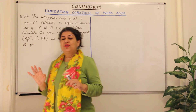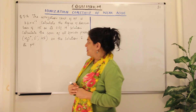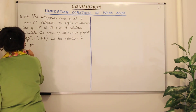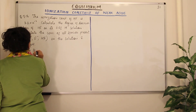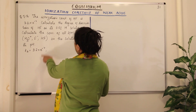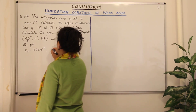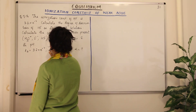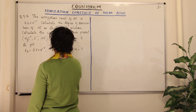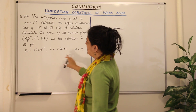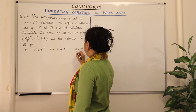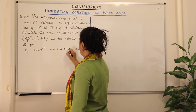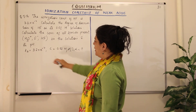The first step is to identify what is given and what is expected. Ka is given as 3.2×10⁻⁴, and the initial concentration C is given as 0.02 molar. We need to calculate: alpha (degree of dissociation), all equilibrium concentrations, and the pH of the solution.